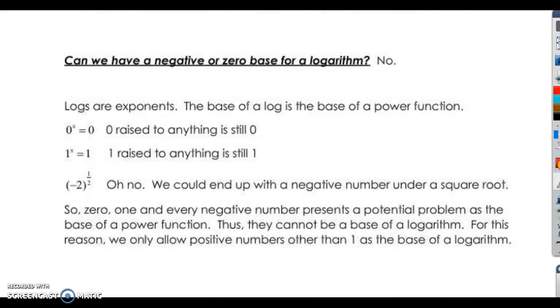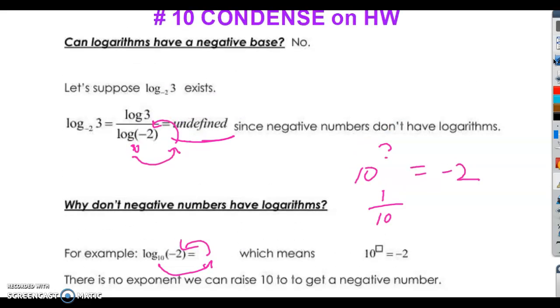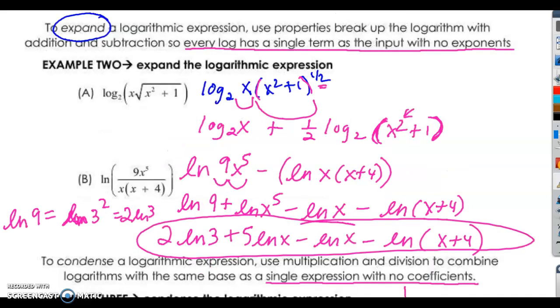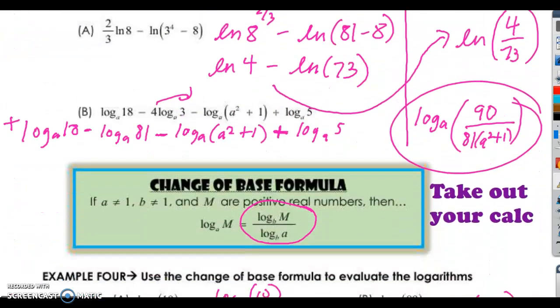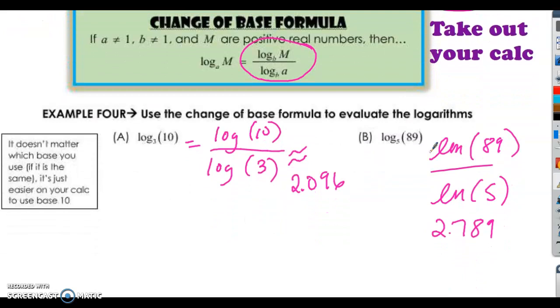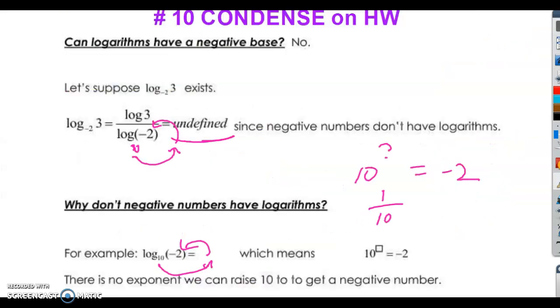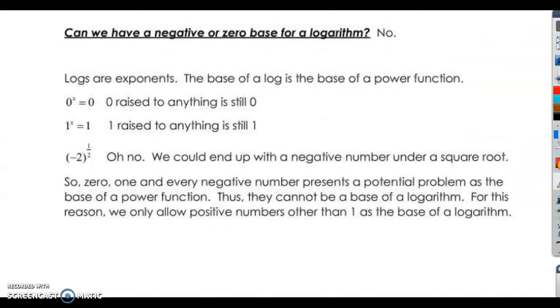Can we have a negative or a zero base for a logarithm? No. So the logs, logs are exponents. The base of a log. So for example, if I go back up here and pick a problem. The log base 3 of 10 equals 2.096. What that means is 3 to the exponent. This is the exponent. So logs are exponents. That's what I mean by logs are exponents.